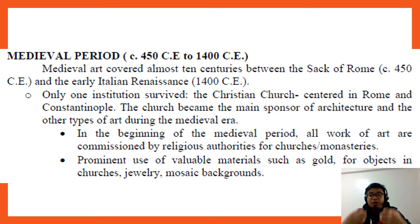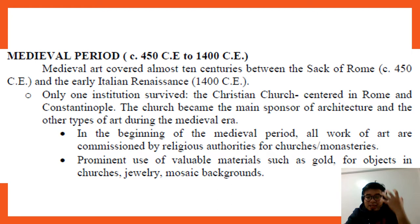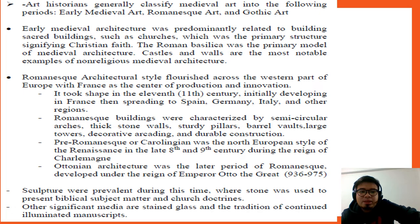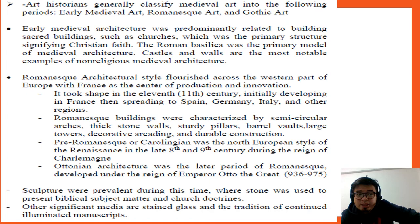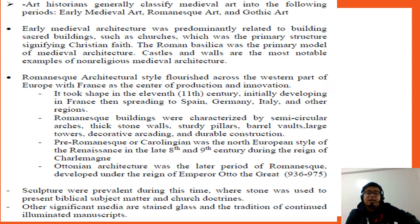Art historians generally classify medieval art into the following periods: Early Medieval, Romanesque, and Gothic art. Early medieval architecture was predominantly related to sacred buildings such as churches, which were the primary structures signifying Christian faith. The Roman basilica was the primary model of medieval architecture. Castles and walls are the most notable examples of non-religious medieval structure.